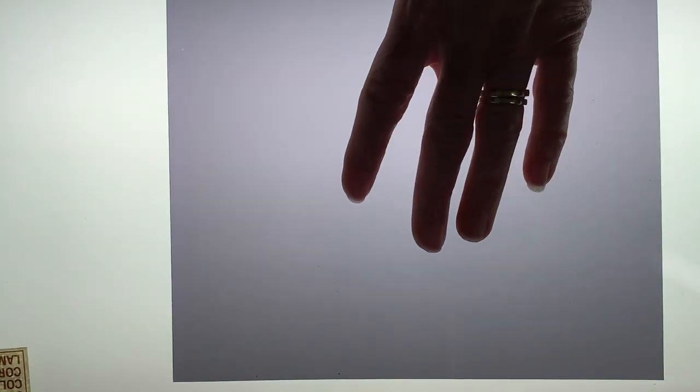So here's a polarizer, a sheet of polarizer. I just put it on a light table and you can see the intensity of the light coming through this is about half of the intensity of just the light table.